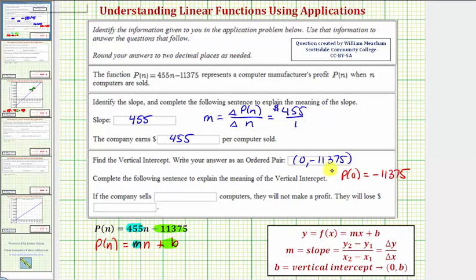So to complete the sentence, if the company sells zero computers, they will not make a profit, they will lose 11,375 dollars. We don't include the negative here because notice how our sentence tells us it is a loss.